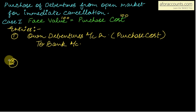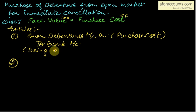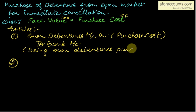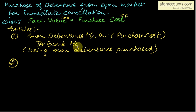This was the entry for purchase of own debentures — own debentures account debit to bank, being own debentures purchased at purchase cost. Now you will cancel your own debentures, so what will be the entry for cancellation?